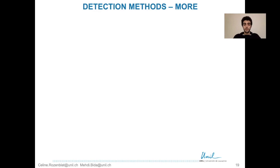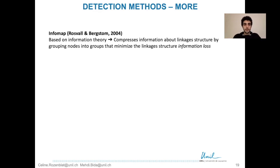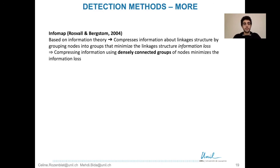The list of community detection methods presented so far is not comprehensive. Many other methods exist, and we list some of them here. The first is the Infomap method, based on information theory. The goal is to compress information about the linkage structure by grouping nodes into groups that minimize information loss. Compressing information using densely connected groups of nodes minimizes the information loss, yielding the clusters.